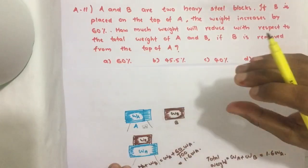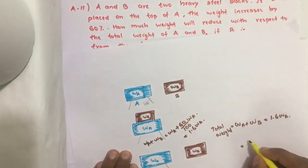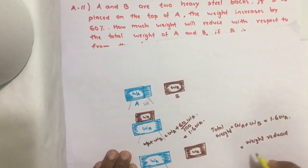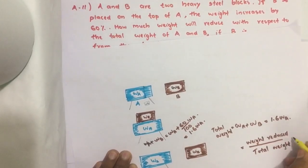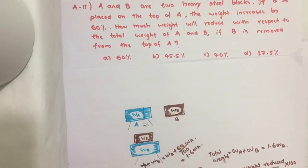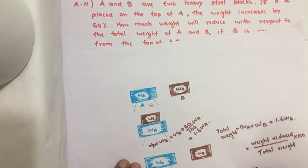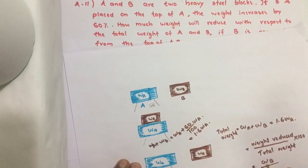What will be the weight reduced with respect to total weight? If B is removed, what is the weight reduced? Weight reduced divided by total weight into 100, we get the answer. Weight reduced equals WB and total weight equals WA plus WB. So if we can convert this WB in terms of WA, we get the answer.